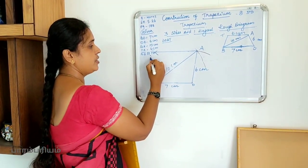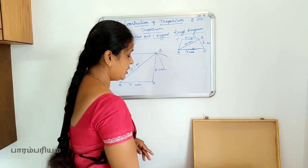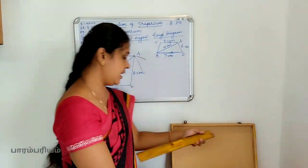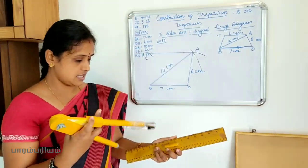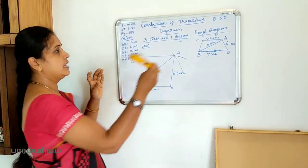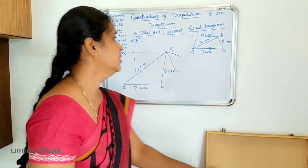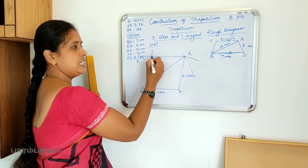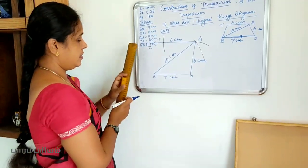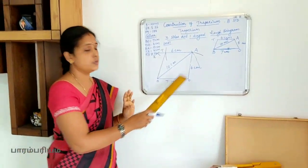You can denote the parallel line as AX. Now, with A as center, draw an arc of radius 6 cm — that is TA = 6 cm — which cuts the line AX at point T. Mark T, then join BT. The trapezium is now complete.